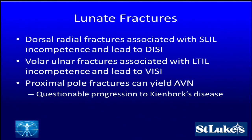Lunate fractures: dorsal radial fractures of the lunate are typically associated with scapholunate interosseous ligament incompetence and can lead to DISI deformity. Volar ulnar fractures typically rip off that critical volar portion of your lunotriquetral ligament, and that can associate itself with a VISI deformity and altered midcarpal mechanics.